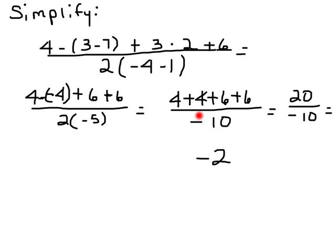Alright, so then I'm going to multiply these two numbers to get negative 10. And then 4 minus negative 4 is the same thing as saying 4 plus 4 plus 6 plus 6. So, I can look at it and see there's two sets of 6 plus 4, which is 10. So, two of those would be 20. So, I'm left with 20 divided by negative 10, which will simplify to negative 2.